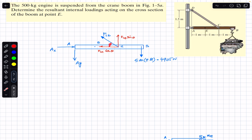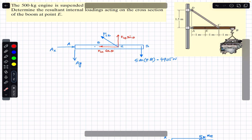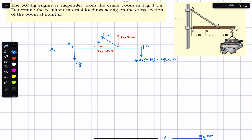Since the angle theta is made with the horizontal, we can resolve FCD into two components: the cosine component along the horizontal and the sine component along the vertical. Point A and E are at a distance of one meter, point E to C is one meter, and point C to B is one meter, so all points are equally spaced one meter apart. We need to find FCD, Ay, and Ax using equilibrium conditions.